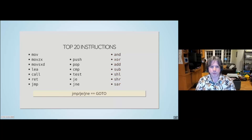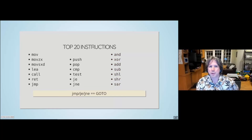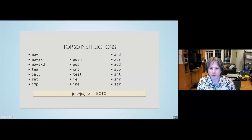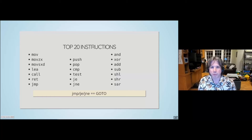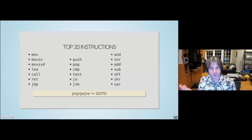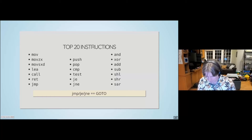XOR appears on the top-20 list surprisingly often. Even though you rarely write XOR in high-level code, the compiler uses it as a trick: XOR-ing a register with itself always produces zero. So 'xor eax, eax' is a fast, compact way to set a register to zero. AND and shift-right are used because a binary shift is essentially multiplying or dividing by powers of two — so any multiply by 4, 8, or 16 can use a shift instruction instead.